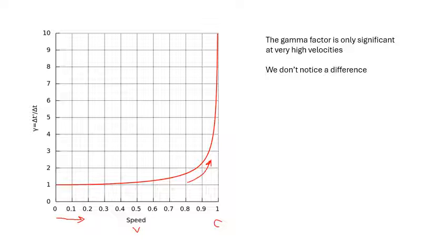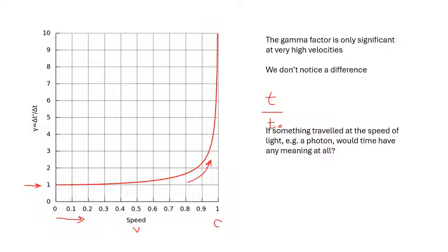Walking to the shops produces negligible time dilation. Remember: gamma equals one when stationary, increasing as speed increases; and for time dilation, it's the big time (stationary observer) divided by the little time (moving observer). Interestingly, for a photon traveling at the speed of light, gamma would be infinite — raising the philosophical question of whether time has any meaning for a photon.